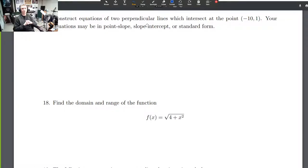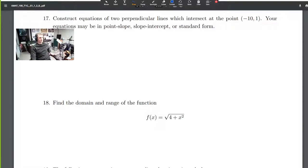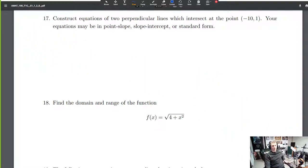Question 17: Construct equations of two perpendicular lines which intersect at the point (-10, 1). Your equations must be in point-slope, slope-intercept, or standard form. Okay, this one's wide open. It doesn't give you any requirements on the slopes at all. They must be in point-slope, slope-intercept, or standard form.